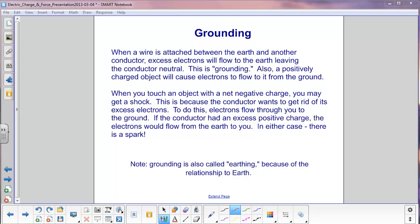When a conducting wire is attached between the earth and another conductor, excess electrons will flow to the earth, leaving the conductor neutral. This is called grounding. For example, if you have an object that has an excess number of electrons, and it gets conducted to ground, those electrons will be attracted to the ground. They'll go back to the earth, leaving the conductor neutral.